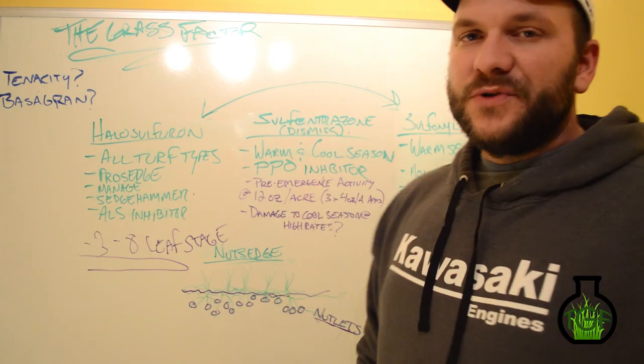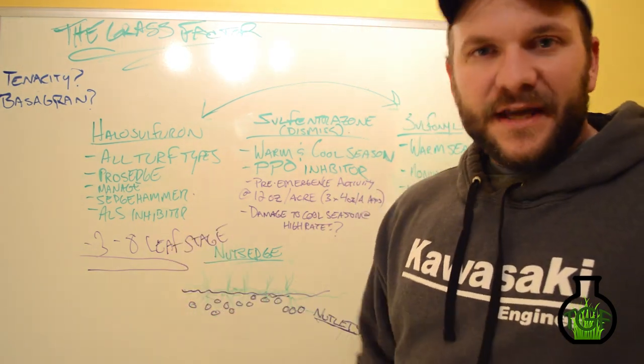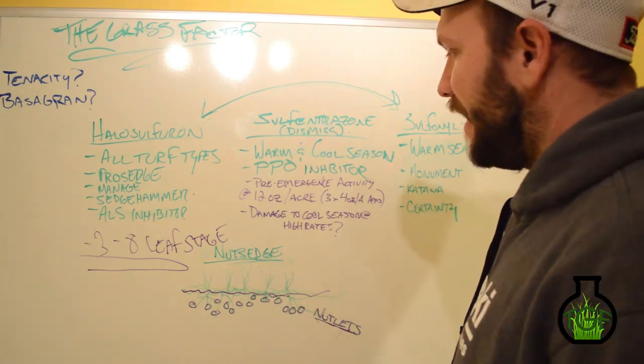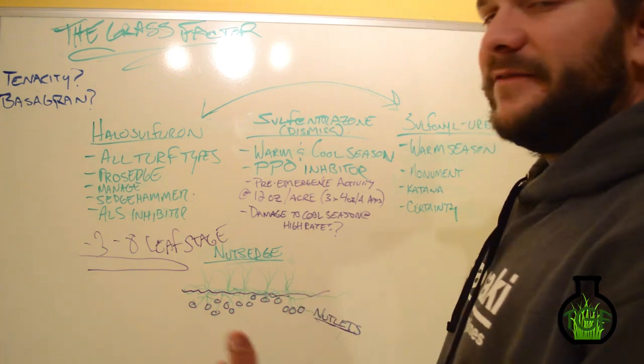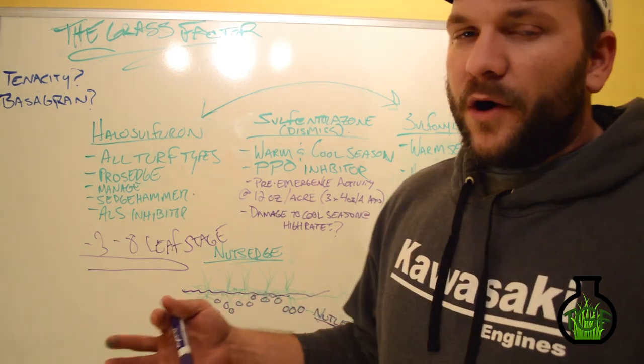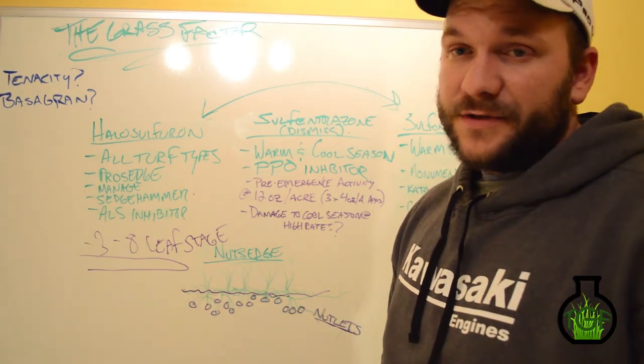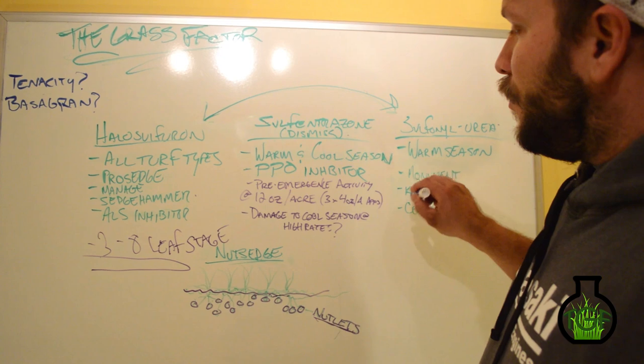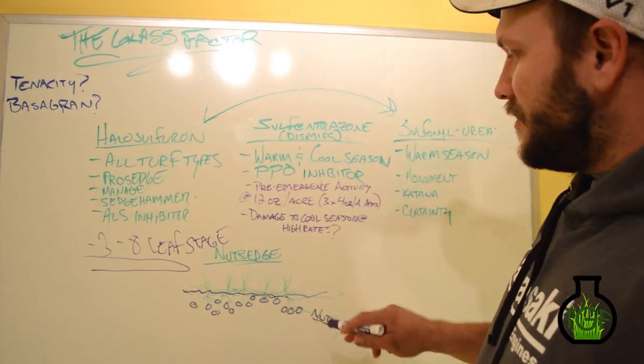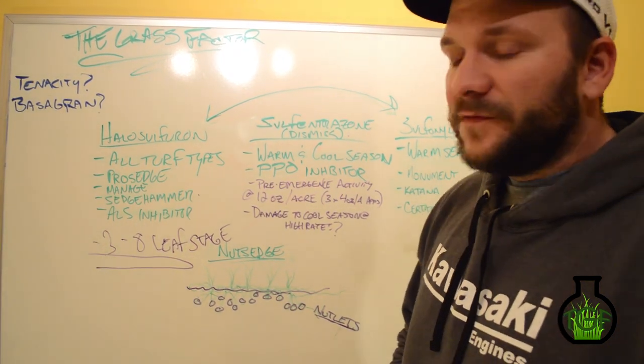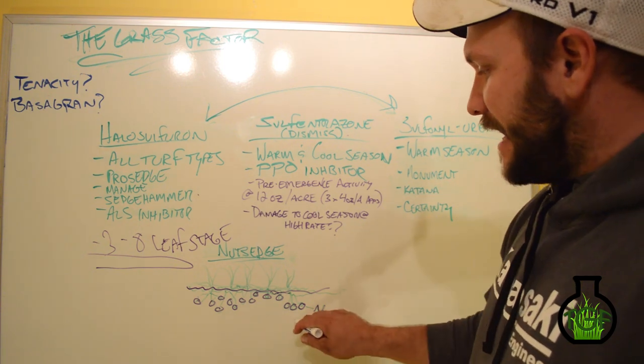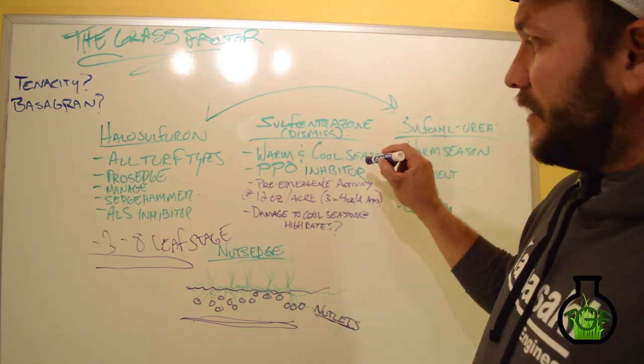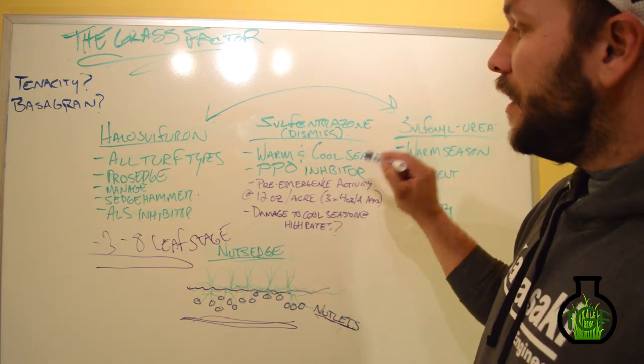Does this mean sulfentrazone is going to prevent yellow nutsedge? There's evidence to say yes, that it potentially can. Now, it may not control purple nutsedge from a pre-emergent perspective, but yellow nutsedge and your annual varieties, there's evidence stating that yes, it can. So there's a popular product on the market called Echelon, which is a mix of prodiamine or Barricade with sulfentrazone, the Dismiss product. And it is labeled to control yellow nutsedge. To get best control, what you're looking to do is get that full 12 ounces to the acre in three applications. So three, four ounce to the acre applications of sulfentrazone is going to have the greatest amount of damage on these nutlets. So you'll get a fair amount of nutlet control with the halosulfuron. You'll get the greatest amount of nutlet control with 12 ounces to the acre total of your dismiss.